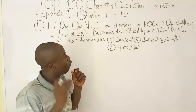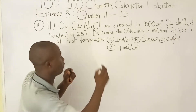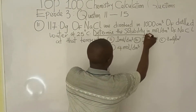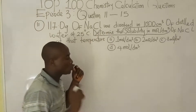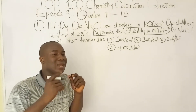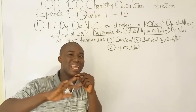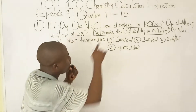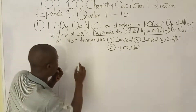First of all, we have to know where this question is coming from. They are asking us to get solubility in moles per dm³. It must be noted that solubility as a word can be expressed in various SI units, and one of them is calculating solubility in moles per dm³.